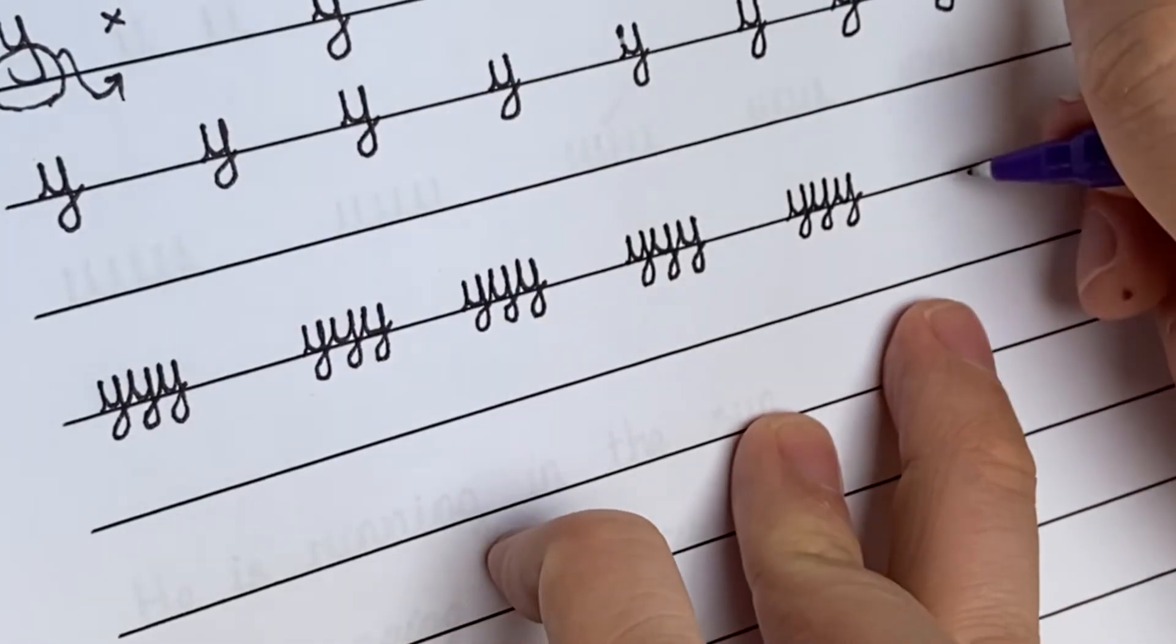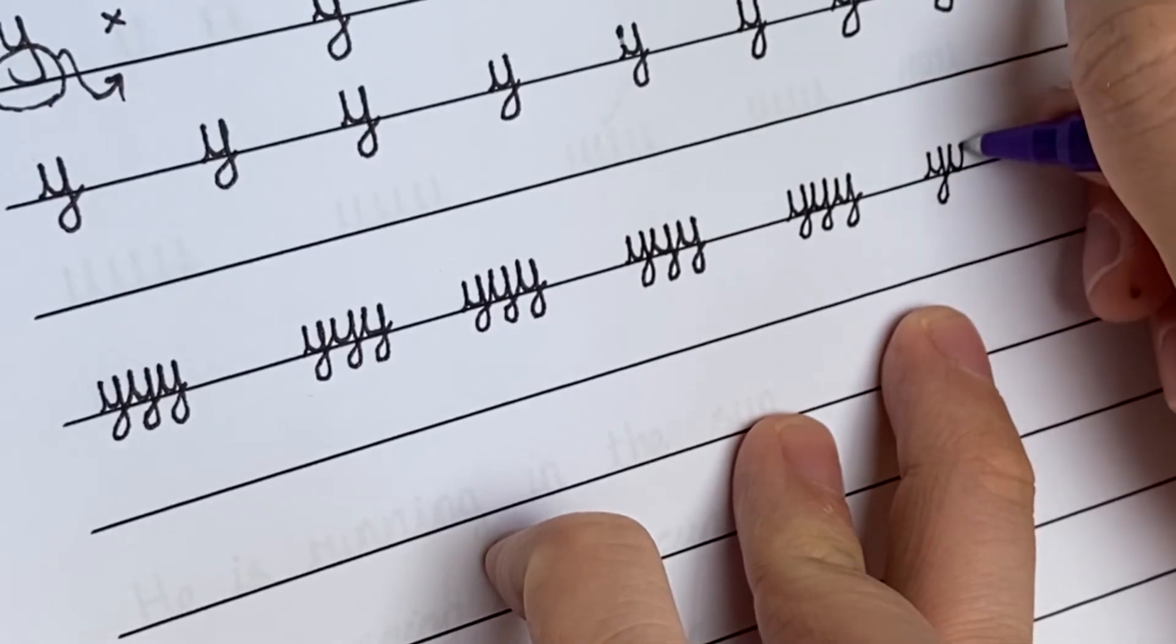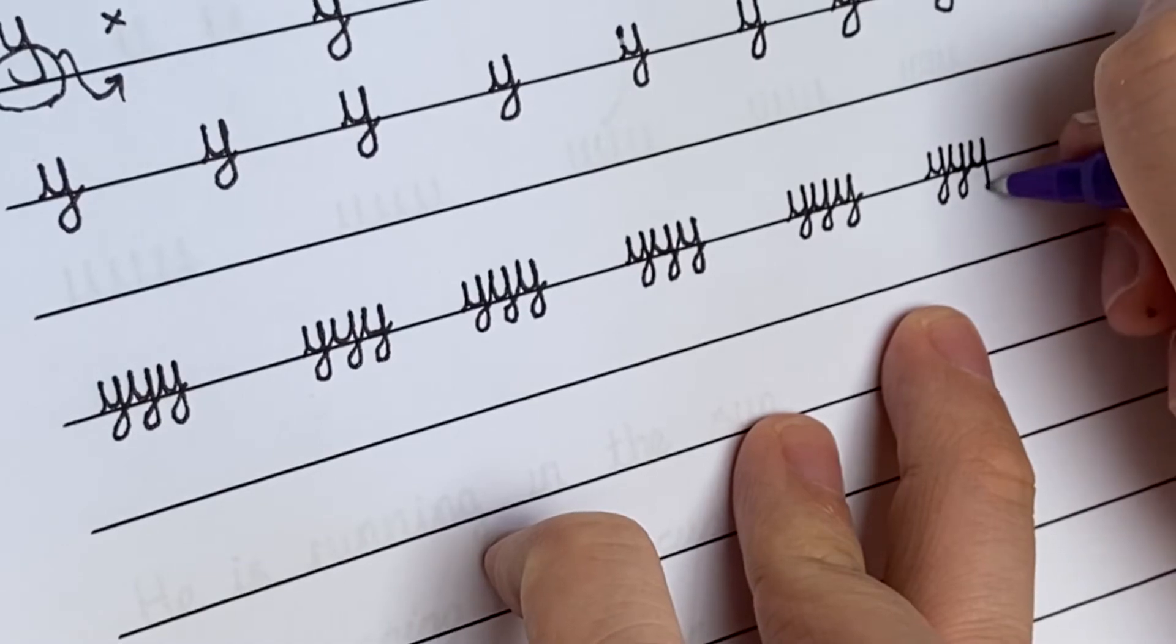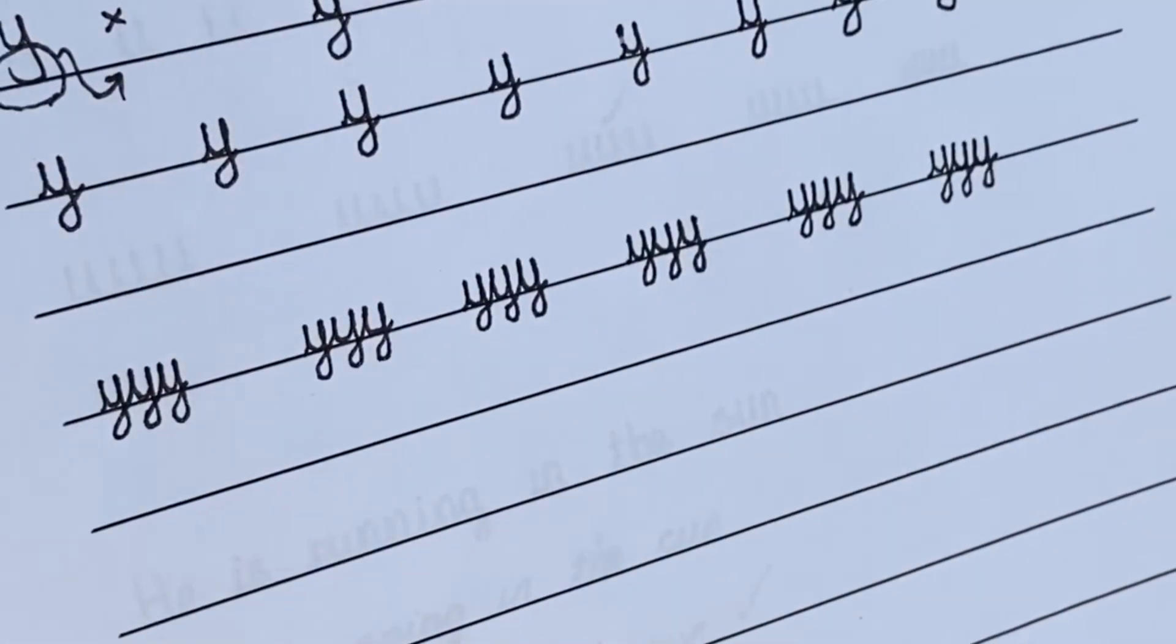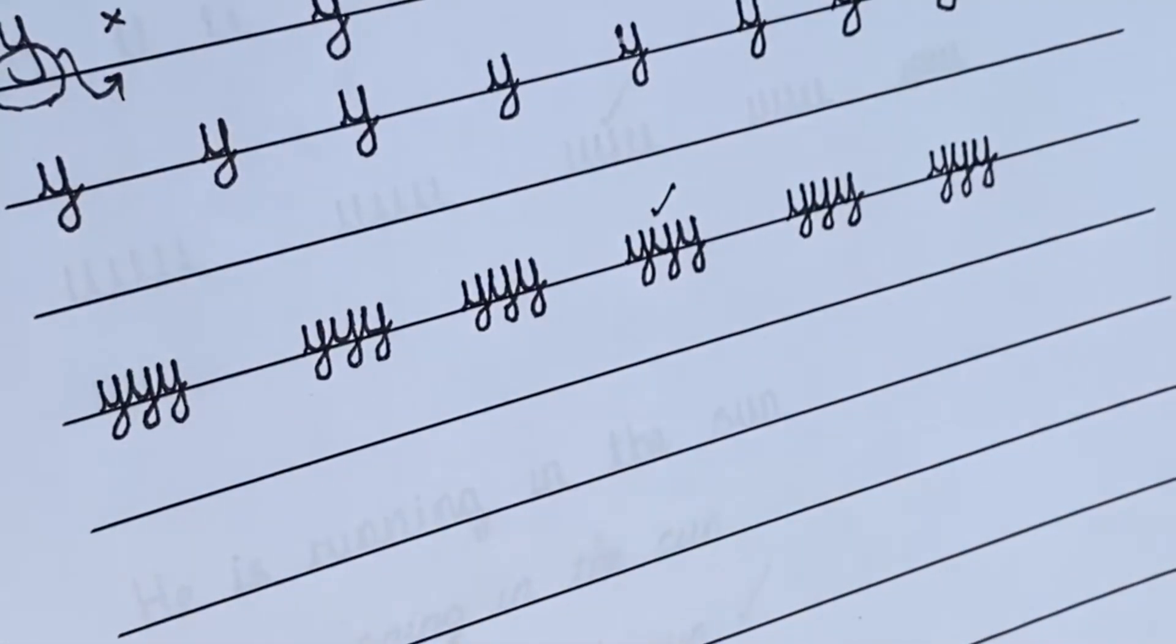On to my final set then of three letter Ys joined together. And then I'm going to choose which set was my favourite. Looking out for my neatest letter Ys where they're the same height. I'm going to give this set a tick. You may tick your neatest set too.